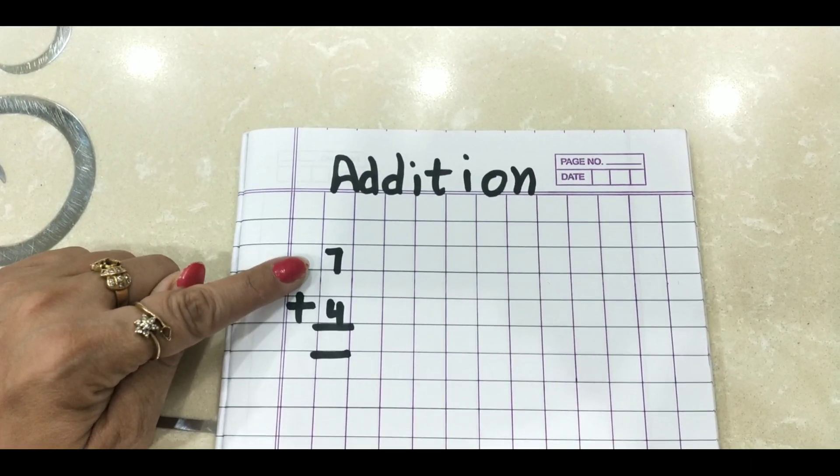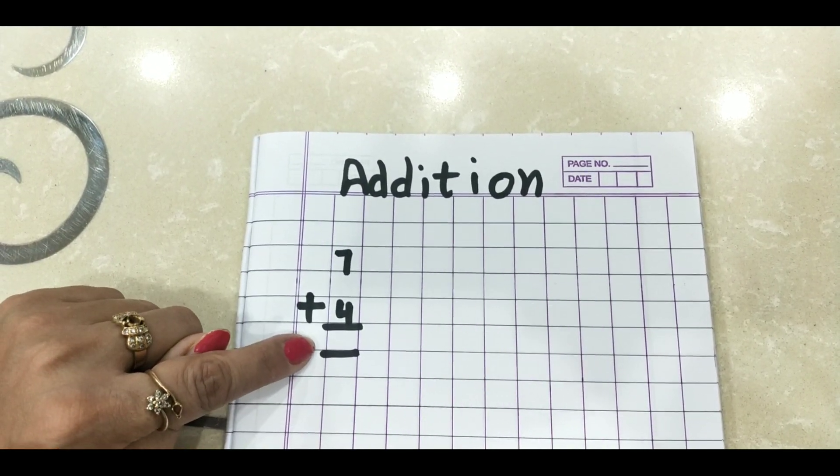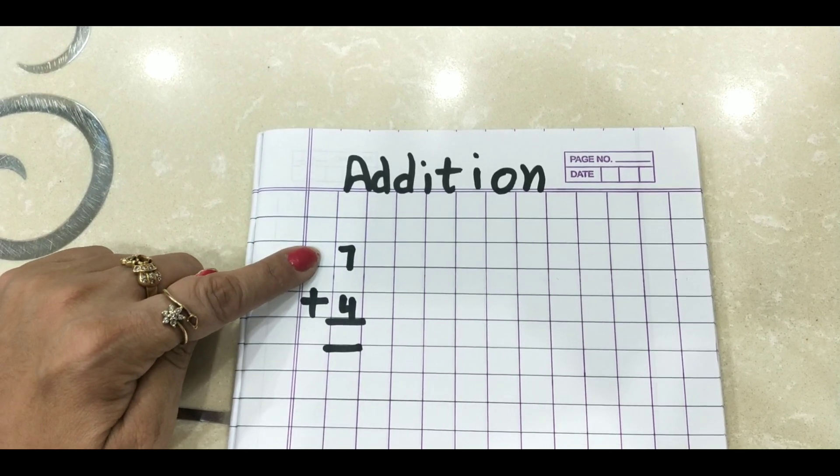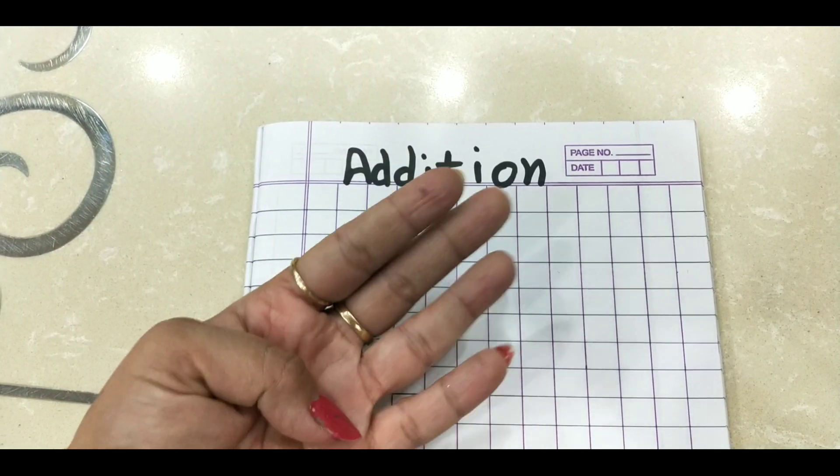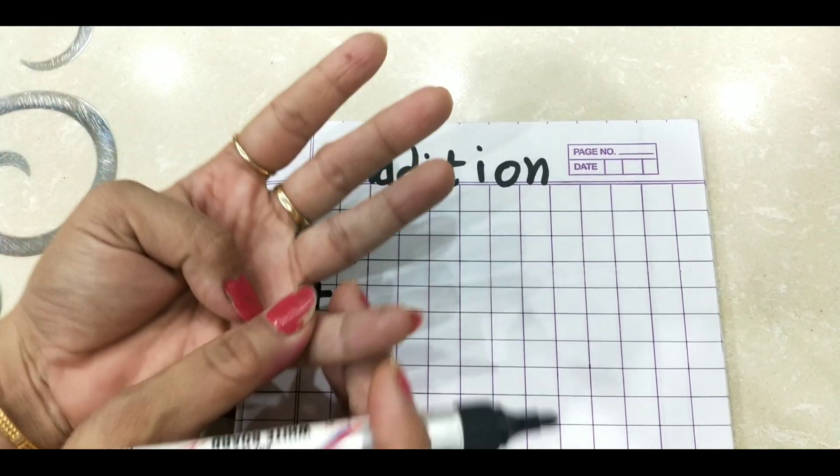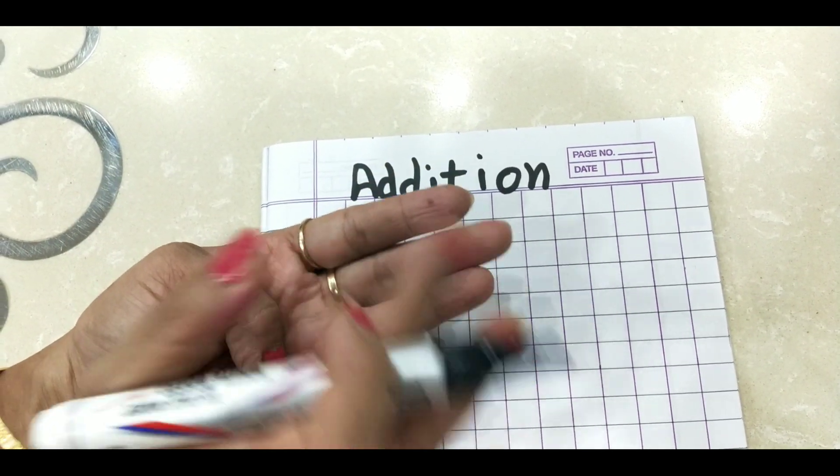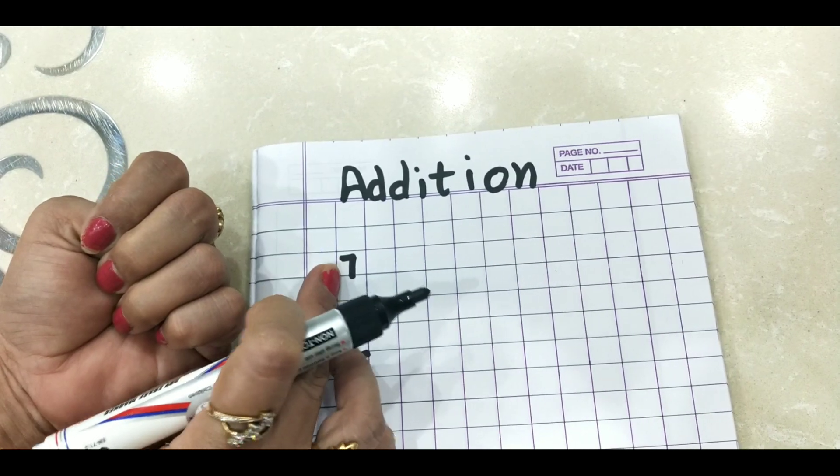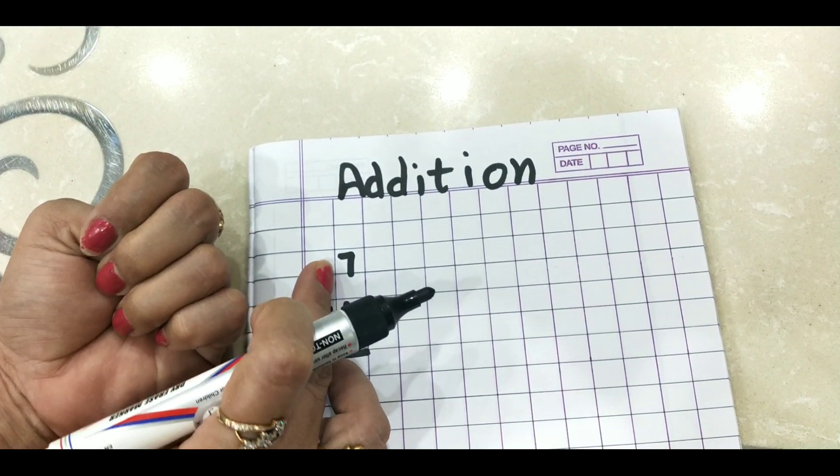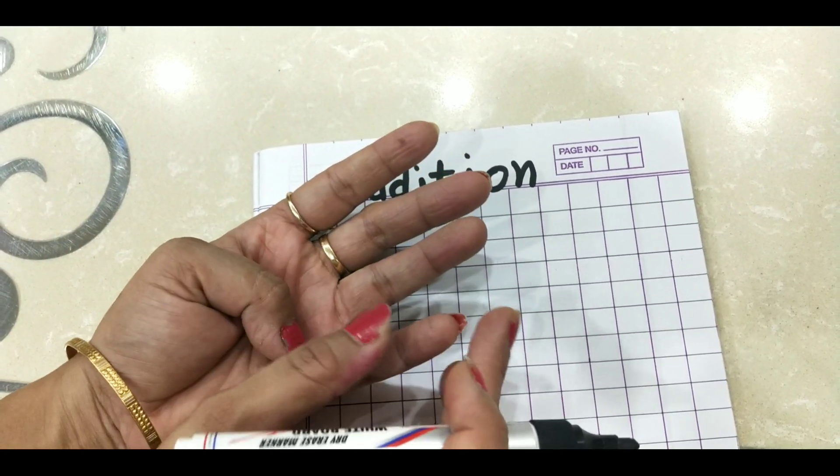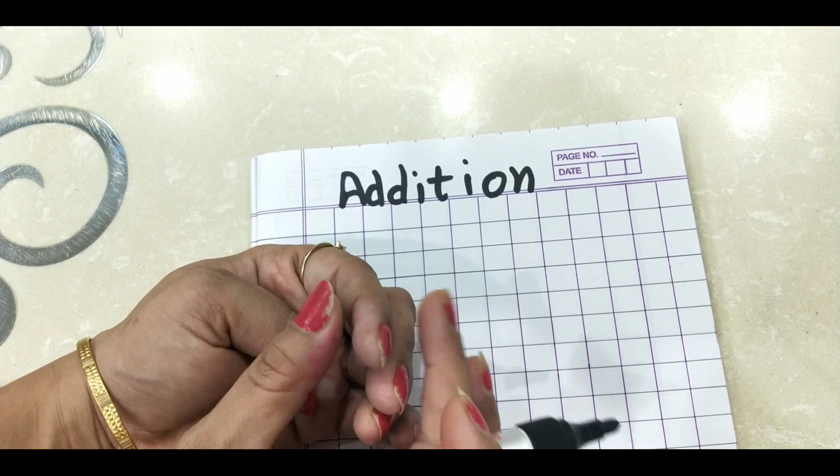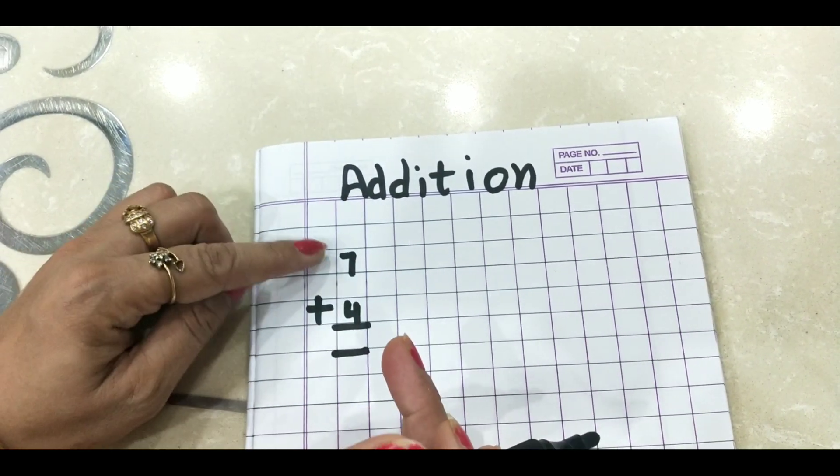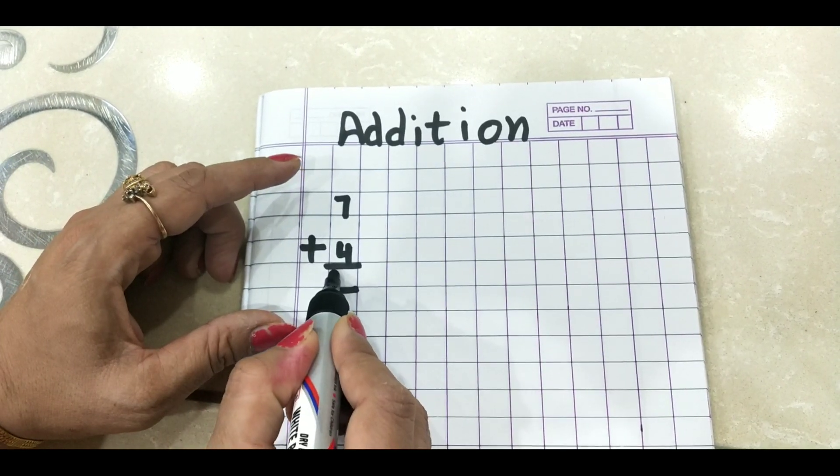Suppose we have to add 7 plus 4, then 7 will keep in our mind and 4 on our fingers. 1, 2, 3, 4. Where is 7? 7 is in our mind. What comes after 7? 8, 9, 10, 11. What is the total? 11.